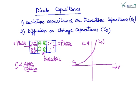So when negative voltage is applied, transition capacitance is the capacitance in the diode. And when forward bias is applied, the capacitance of the diode is storage capacitance or diffusion capacitance.